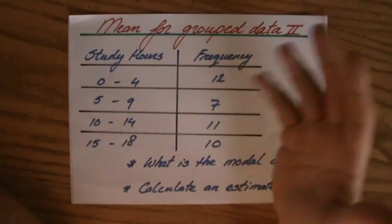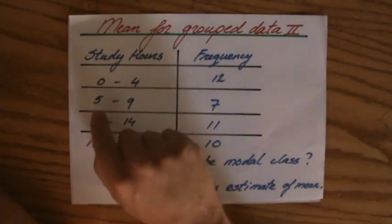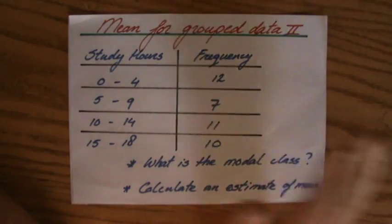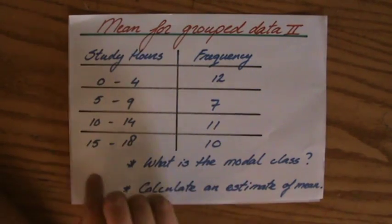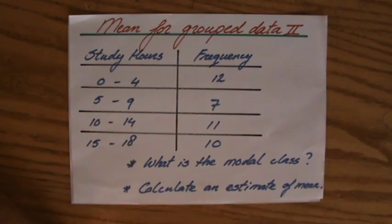Let's say between 0 and 4 hours a week, 12 students. Between 5 and 9, 7 students. Between 10 and 14 hours of study each week, 11 students. And 15 and 18, 10 students.